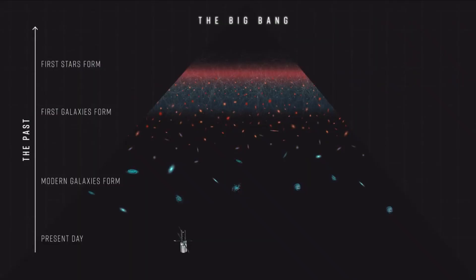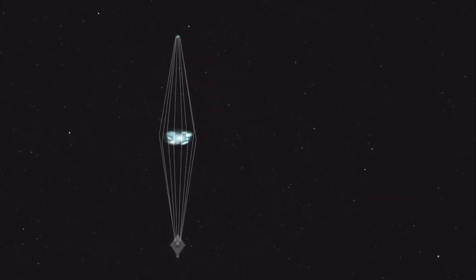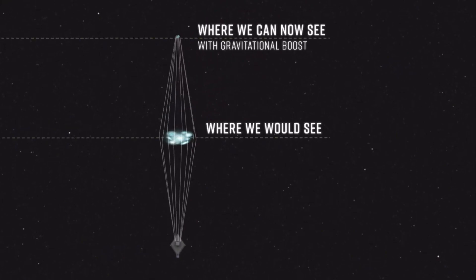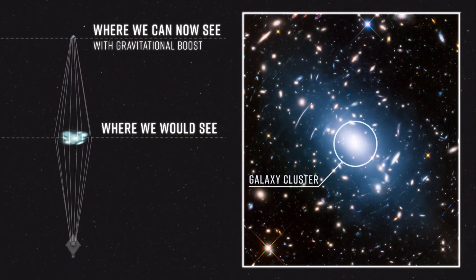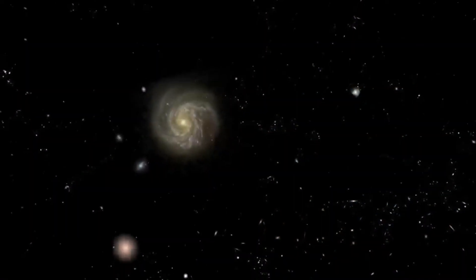Thanks to this lensing, Webb can peer back 9 billion years to when Sparkler was greedily feeding only 4 billion years after the Big Bang. Webb reveals Sparkler in unprecedented detail, unlocking an image of early galaxy formation. The techniques of gravitational lensing extend Webb's vision even farther back in space and time.